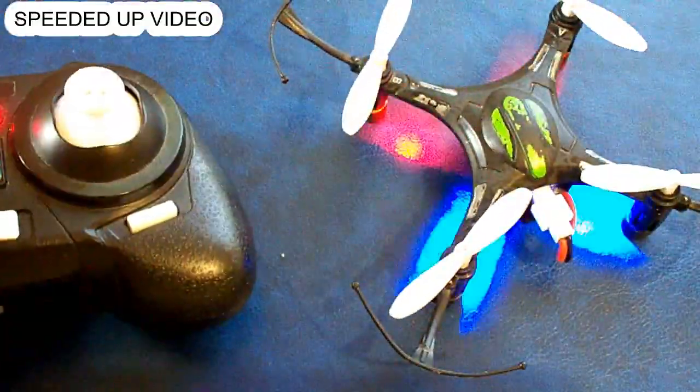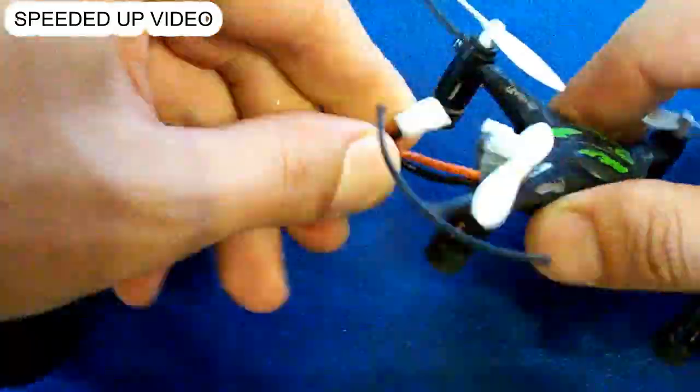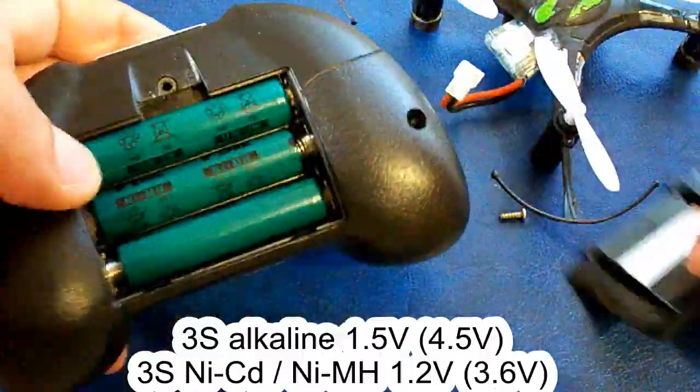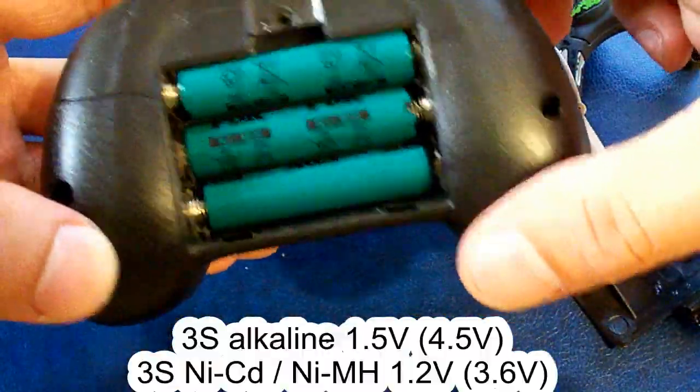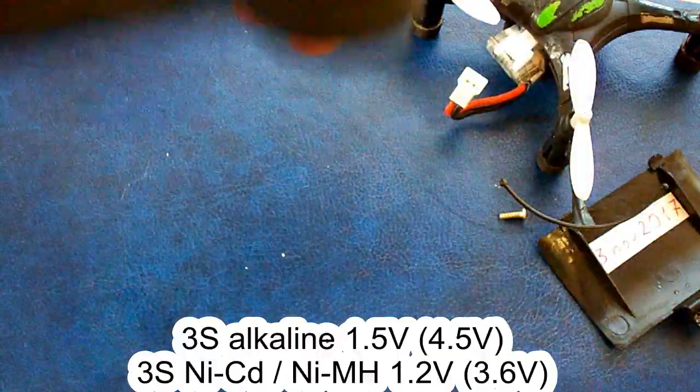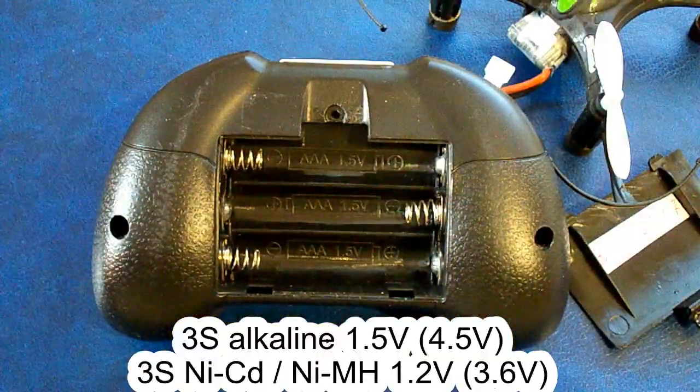Hello Youtubers, I've got a quadcopter which has a remote control unit powered by AAA size alkaline, nickel cadmium or nickel metal hydride batteries connected in series of 3. I decided to make it lithium powered and rechargeable via a micro USB port.